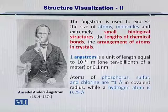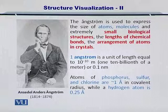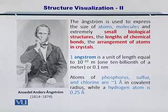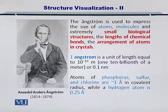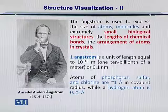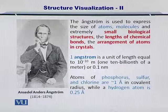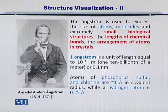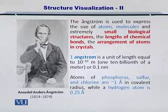And of course, because the proteins are so small, we need a small unit as well. To give you an idea of the scale, the atoms of Phosphorus, Sulphur, and Chlorine are approximately 1 Angstrom in covalent radius, while a hydrogen atom is one quarter of an Angstrom, or 0.25 Angstrom.